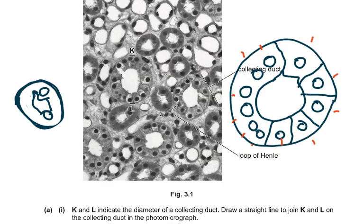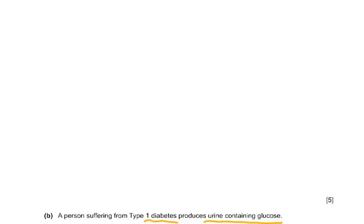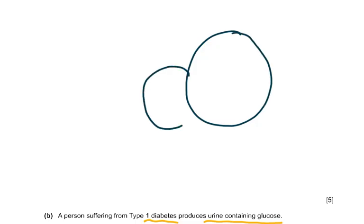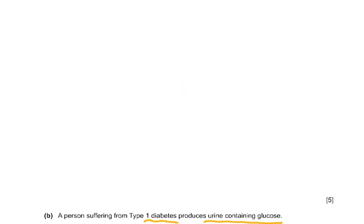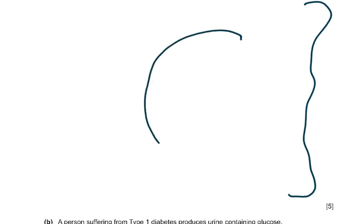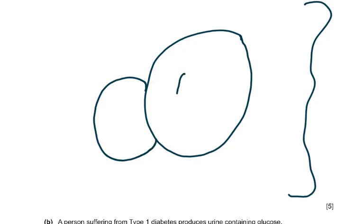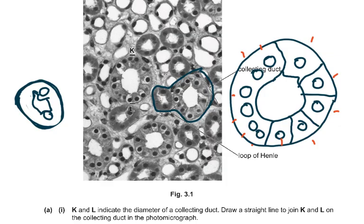Now look at the loop of Henle. You had to draw them close to each other because in the photomicrograph they are nearly touching. You draw them together — the collecting duct and then the loop of Henle drawn next to it. They should be bigger, occupying nearly two-thirds of the space provided. The exact space provided was a specific area, so one structure would be a little bigger and the other a little smaller, drawn side by side exactly as shown.